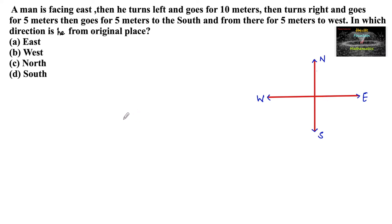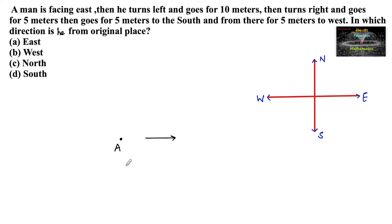Now we will mark the position of the person. Let us mark the initial point as A. He is facing east — in the east direction he is facing.